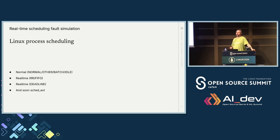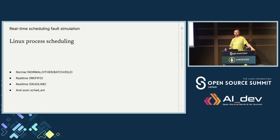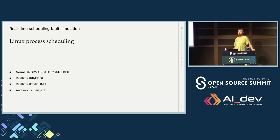Deadline is a little bit of a special case. The deadline scheduler is more about: I want to do a certain amount of work every period, and I have a certain deadline to do it to. The kernel does make certain guarantees about availability. You cannot oversubscribe deadline, whereas with RR and FIFO you could end up accidentally oversubscribing. Also, very hastily added to the slides: there's the sched_ext work going in, which I haven't had time to look at, so we won't discuss it very much.